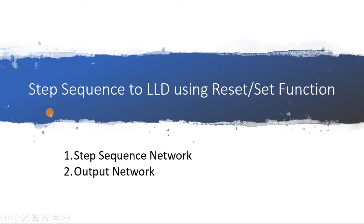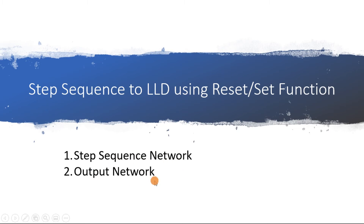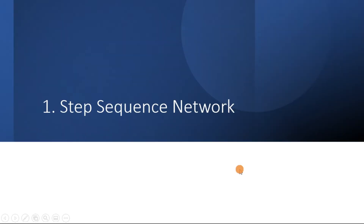We are going to move this step sequence to a ladder logic diagram by using the Reset/Set (RS) function. In order to use this RS function, you need to understand there are two networks available for this transformation. The first is the step sequence network, which consists of the memories and the steps. The second is the output network, which consists of the output conditions for each step. We start with the first — the step sequence network.